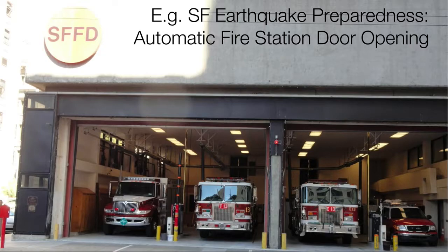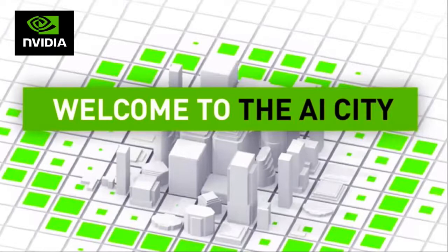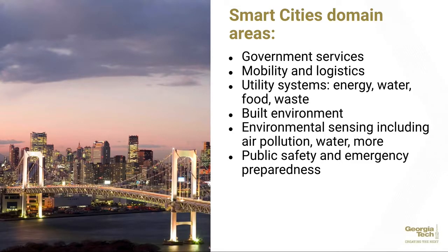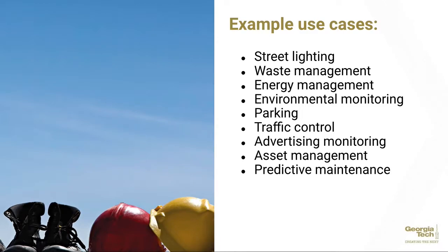Because the doors are electric, if the power is out, they won't be able to get the fire trucks out. Another vision of smart city is NVIDIA's, which is around the AI city and looking at data from cameras. Broadly speaking, smart cities' domains cover a number of areas: government services, mobility and logistics, how you get people and goods around, utility systems, energy, water, food, waste, the built environment including buildings, environmental sensing including air pollution and water sensors, and public safety and emergency preparedness. Some example use cases are intelligent street lighting, waste management, energy management, environmental monitoring, parking, traffic control, advertising monitoring, asset management, and predictive maintenance.